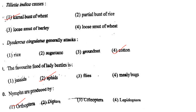Next one: Tilletia indica causes option 1, kernel bunt of wheat; option 2, partial bunt of rice; option 3, loose smut of barley; option 4, loose smut of wheat. Answer is option 1: kernel bunt of wheat.